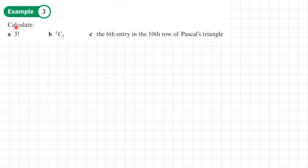Example 3, part a, we want to calculate 5 factorial. Now we can use our calculator to do it. If I'm doing it manually, it would just be 5 times 4, times 3, times 2, times 1. So calculator on manually, it works out to be 120.